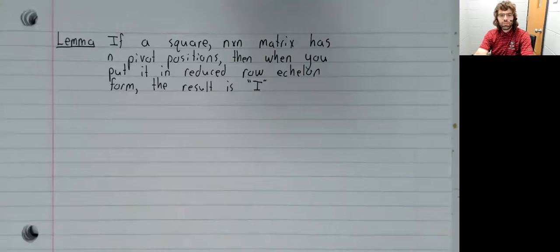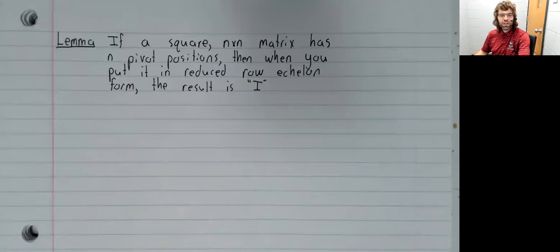We are now in a pretty good position to state the theorem for when a matrix does or does not have an inverse. We just need one lemma. Lemma: if a square n by n matrix has n pivot positions, then when you put it in reduced row echelon form, you get the identity matrix.